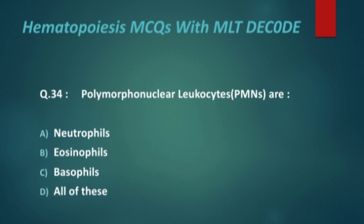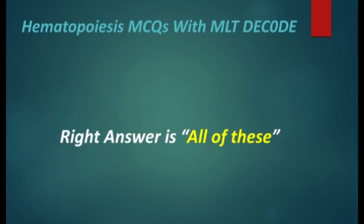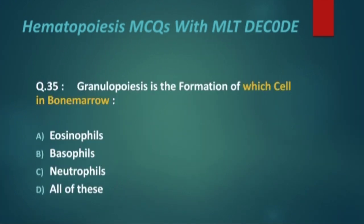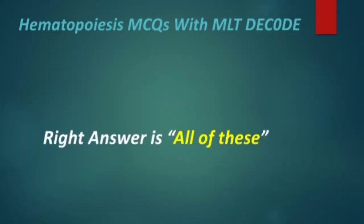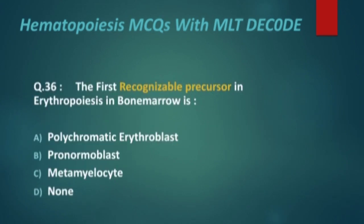Next: polymorphonuclear leukocytes include which cells? Options are: neutrophils, eosinophils, basophils, and all of these. The right answer is all of these. Next: granulopoiesis is the formation of which cell in bone marrow? Options are: eosinophils, basophils, neutrophils, and all of these. The right answer is all of these.